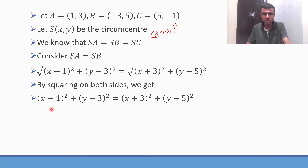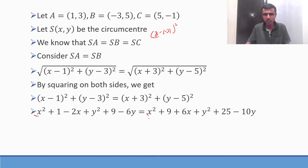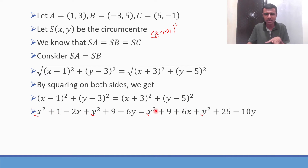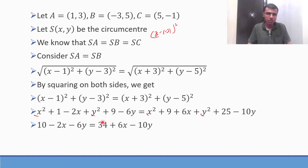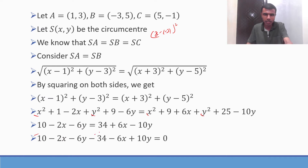X squared cancels on both sides, and Y squared cancels on both sides. So 1 plus 9 = 10, giving us 10 minus 2X minus 6Y = 9 plus 25 which is 34, plus 6X minus 10Y. Bringing everything to the LHS: 10 minus 34 minus 2X minus 6X plus 10Y minus 6Y = 0, which gives minus 24 minus 8X plus 4Y = 0.